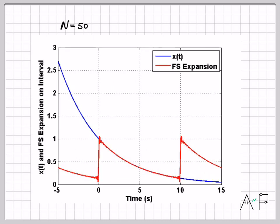And then if I go to N equals 50, now things are starting to look really good. The expansion on this interval, there's almost no mismatch. Outside of the interval, this Fourier series expansion is periodic, which we knew it would be. Anytime I find a Fourier series representation, the representation itself is a periodic signal.